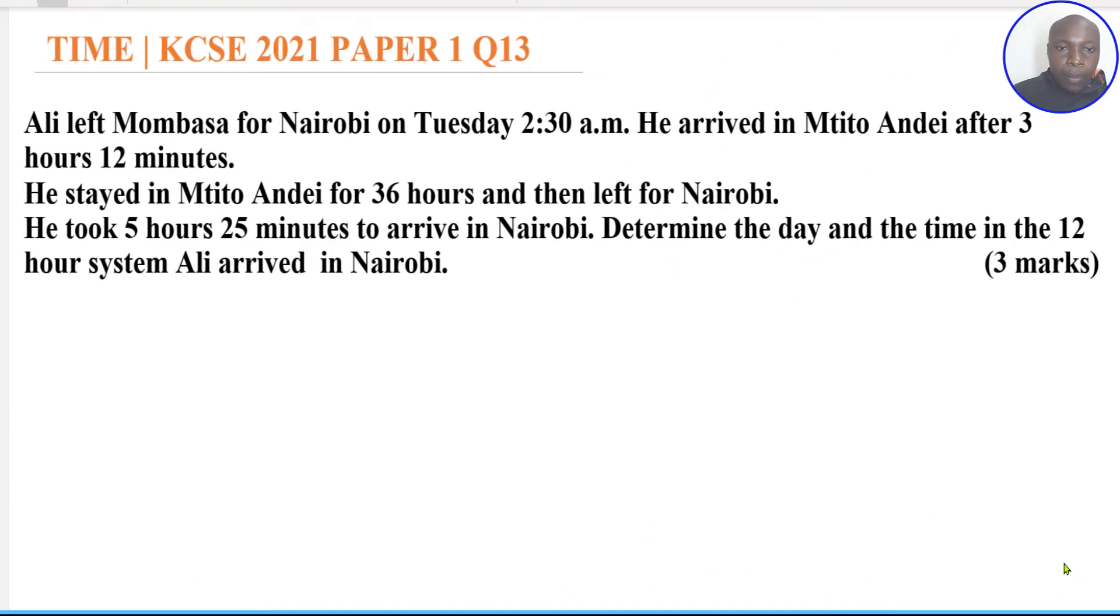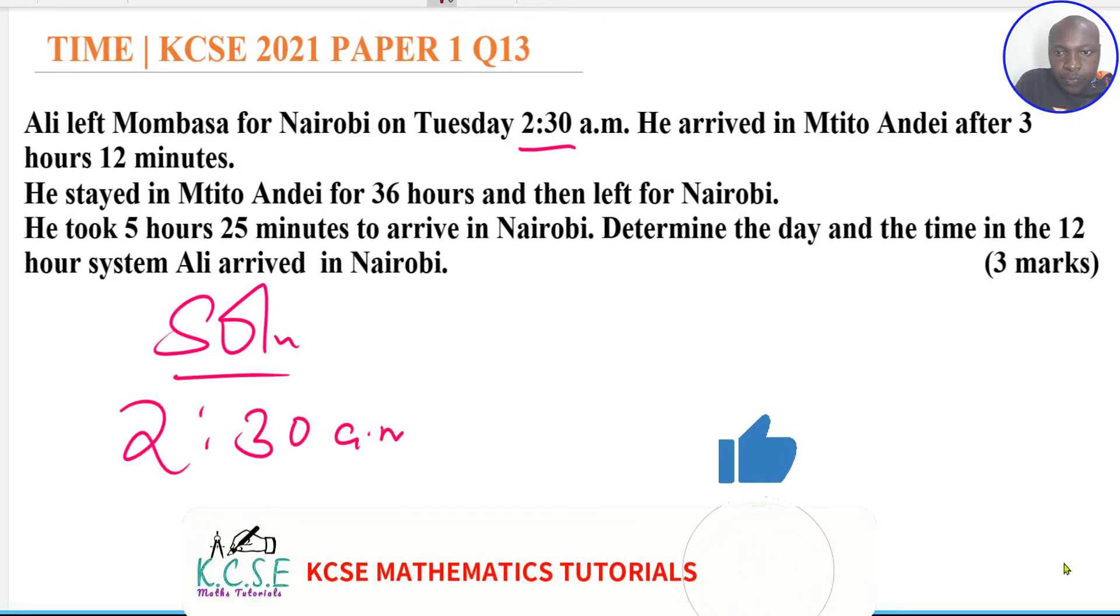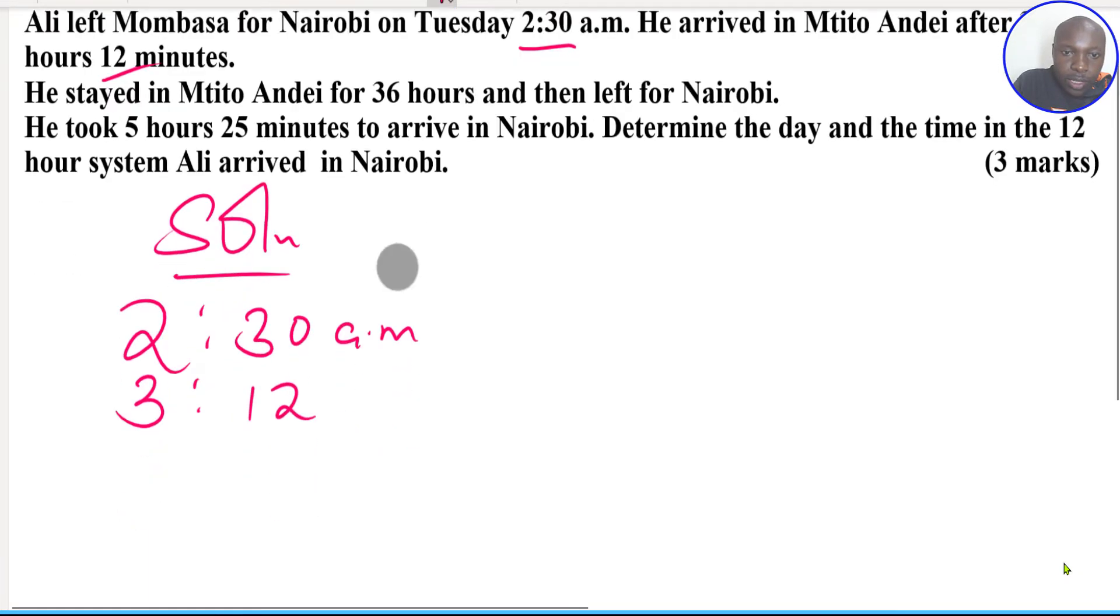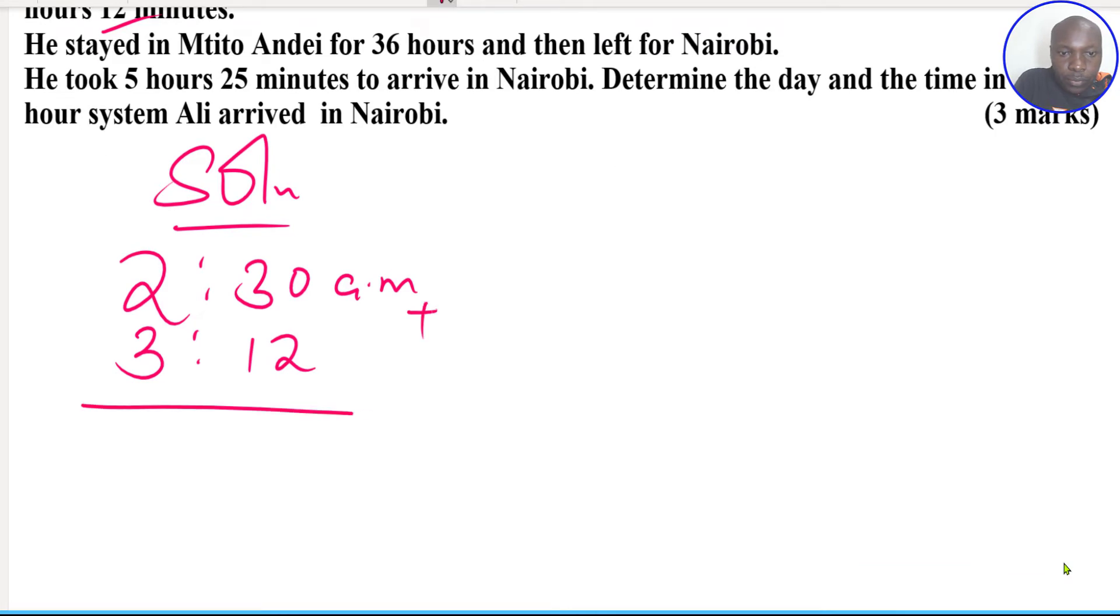Now we're going to begin here. He started the journey at 2:30 am. He arrived at Mtito Andei after 3 hours 12 minutes. So the time that he arrived, to get that we shall add 3 hours and 12 minutes. And this should give 5:42 am.